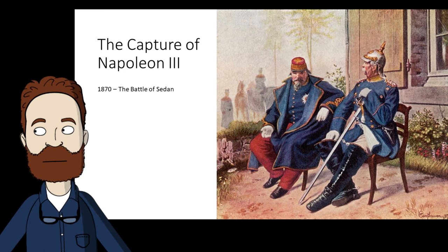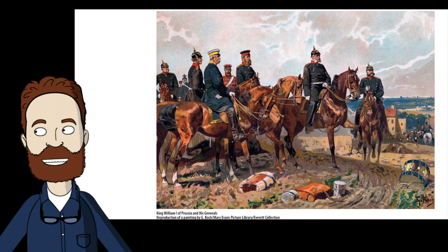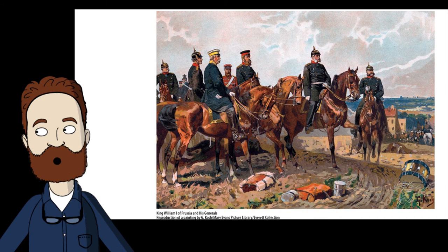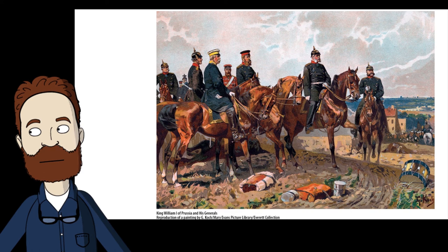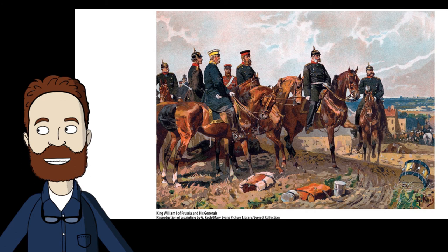France was forced to surrender significant portions of Alsace-Lorraine and agreed to pay an indemnity of $1 billion. The patriotic enthusiasm generated by the wars made it possible for Bismarck to absorb the German states into the Northern German Confederation. Treaties were negotiated during the course of the war stipulating that all of Germany be united into a Hohenzollern Empire. The agreements were formalized at an impressive ceremony at Versailles in 1871.